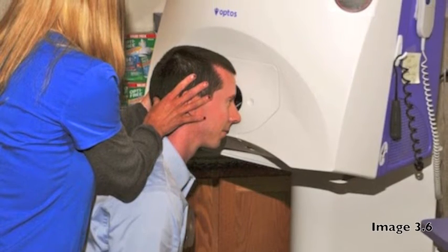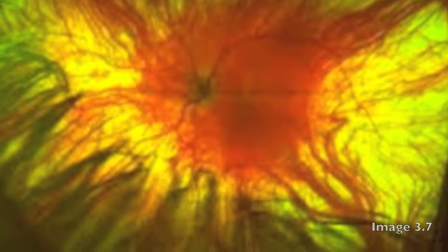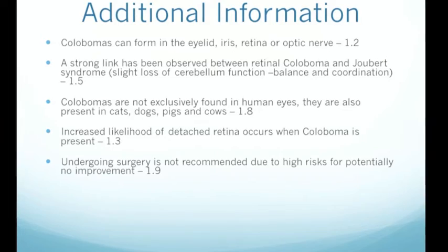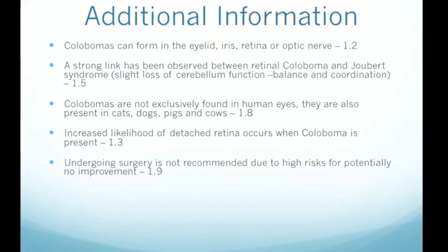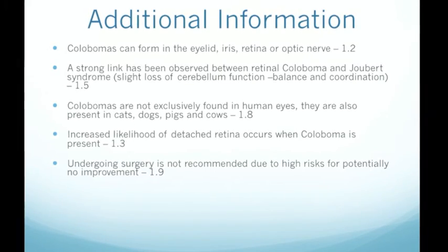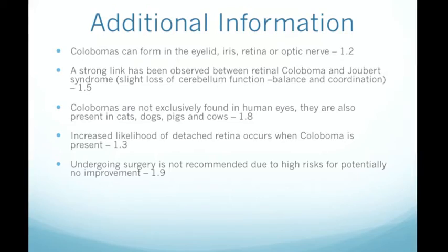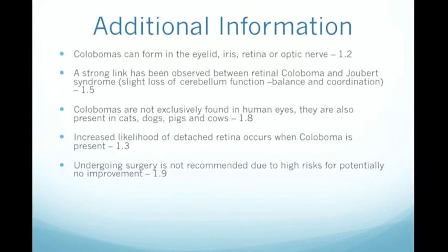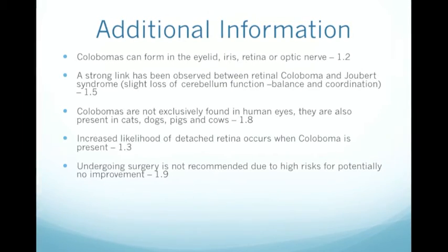Here we see an example of the machine used to display the retina in fine detail, and an example of its image. Colobomas can form in the eyelid, iris, retina, or optic nerve. A strong link has been observed between retinal coloboma and Joubert syndrome, characterised by a slight loss of cerebellum function leading to balance and coordination issues. Colobomas are also present in cats, dogs, pigs, and cows. There is an increased likelihood of a detached retina when coloboma is present, and surgery is not recommended due to high risks for potentially no improvement.